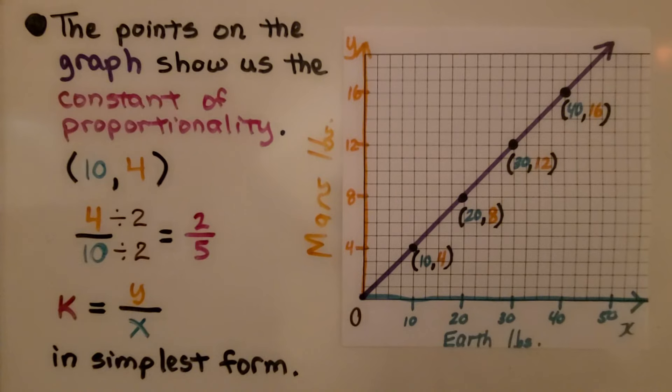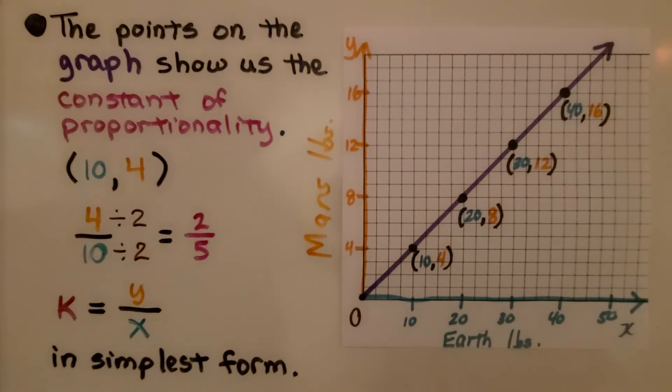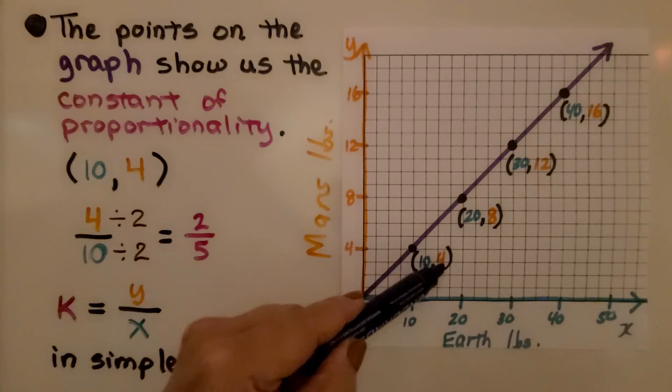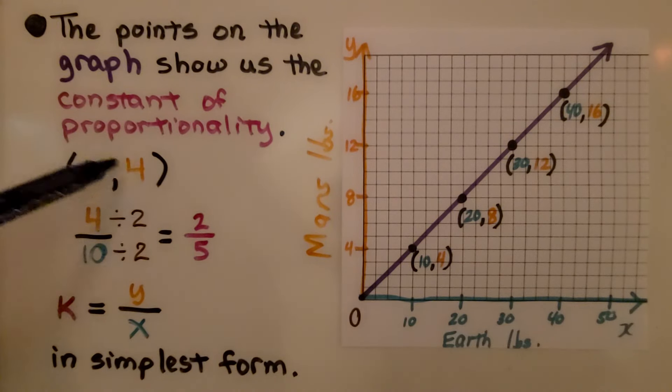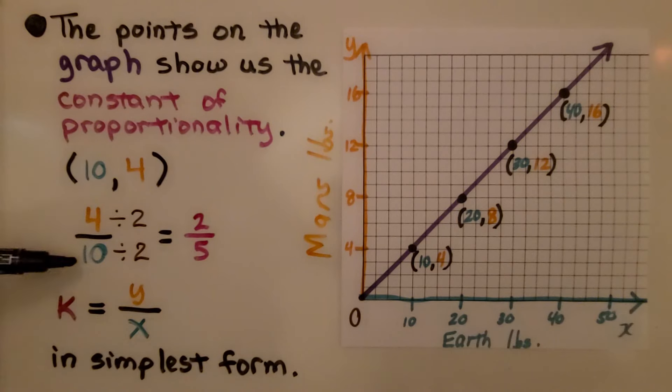The points on the graph show us the constant of proportionality. We have 10 for x and 4 for y, our ordered pair is (10, 4). We can write it as y over x, 4/10, and if we simplify it, we get 2/5. So it is 2/5 in its simplest form.